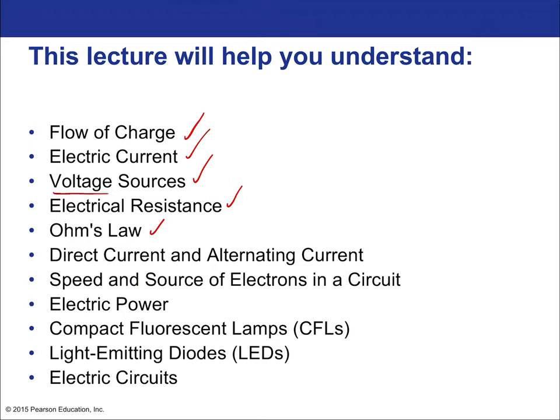We'll talk about direct and alternating currents — AC and DC — what the difference is and what we need to know about that. We'll also discuss the actual speed of electrons as they bounce around inside a wire, how you can take electrical current and voltage to create power, and then some specific applications of currents: CFLs, LEDs, and finally simple electrical circuits.